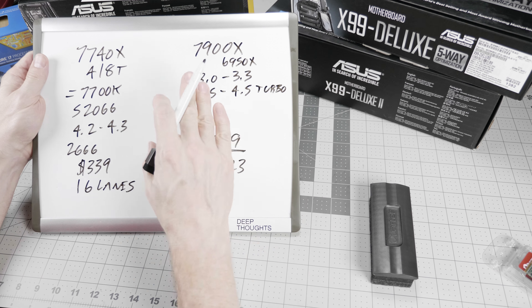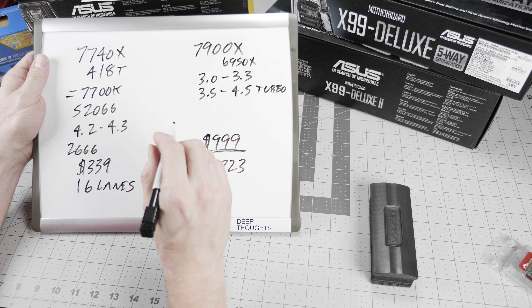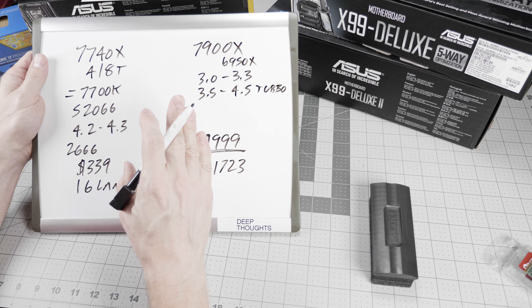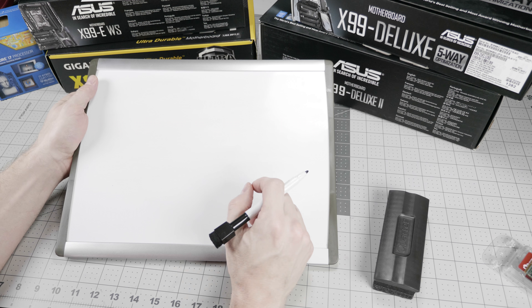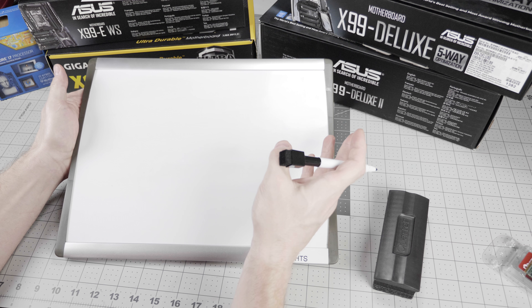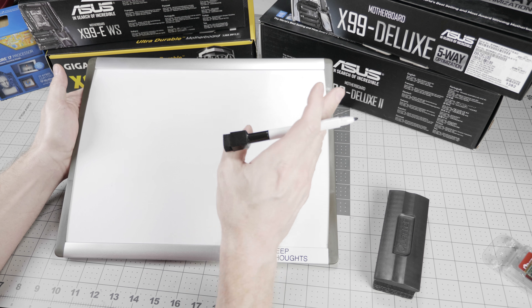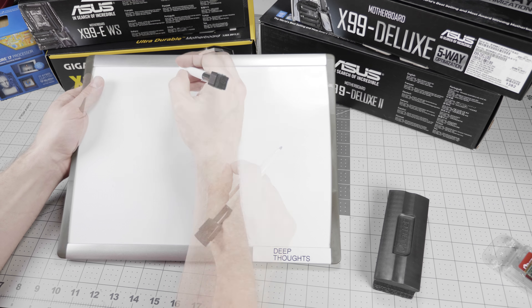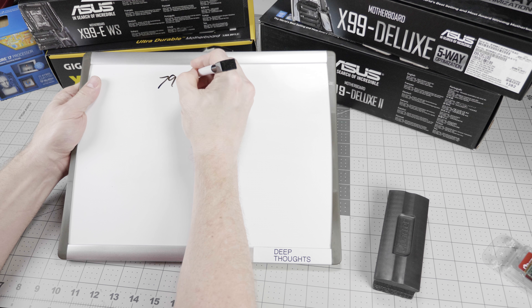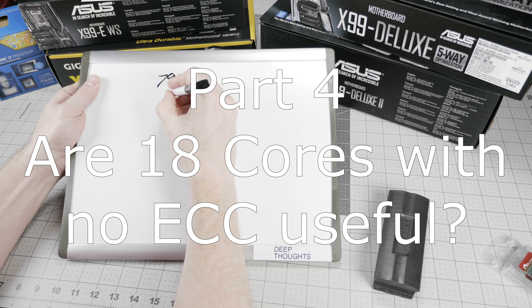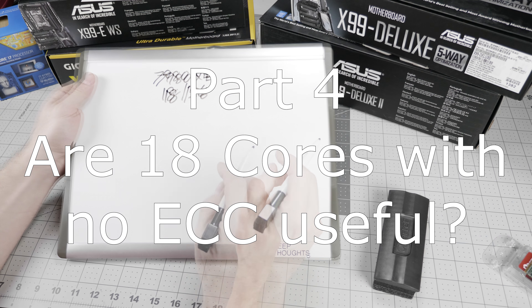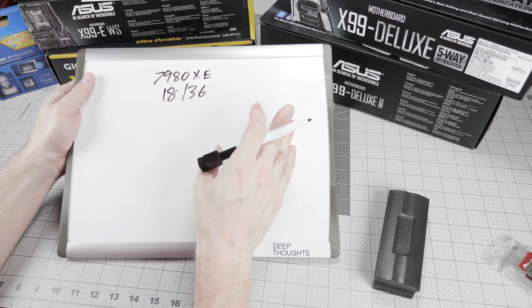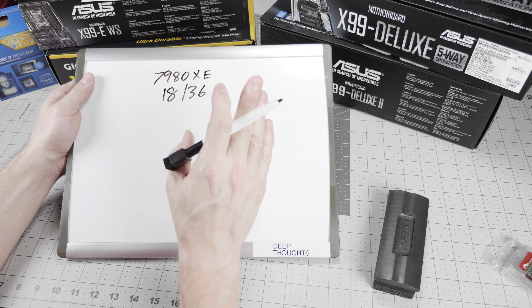More cores than 10 are starting to get a little nutty. You may ask why the 7900X is the sweet spot when there are four SKUs above it. Let's look at the flagship, the 7980XE, which has 18 cores and 36 threads. 18 cores is pretty amazing in the high-end desktop lineup, but before you get excited, there are some major caveats.